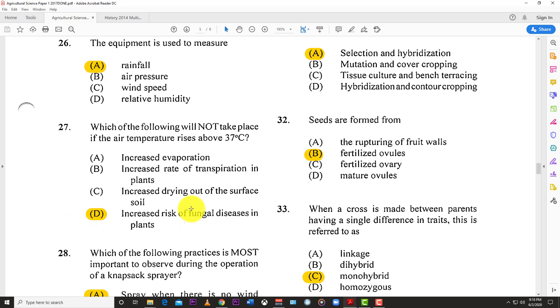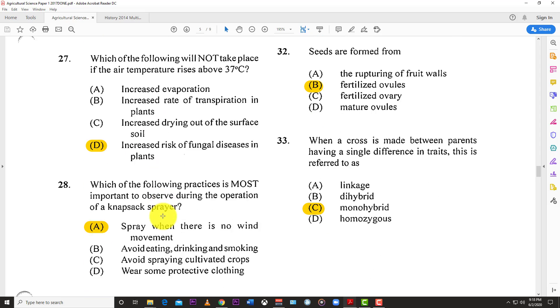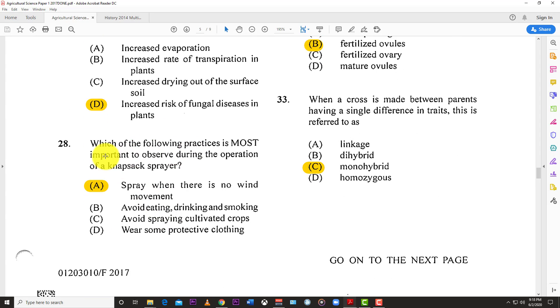Number twenty-seven: Which of the following will not take place if the air temperature rises above 37 degrees Celsius? The best answer is D, increased risk of fungal disease in plants, because fungus normally thrives in moist, cool temperatures. The higher the temperature, the less favorable it is for fungi.